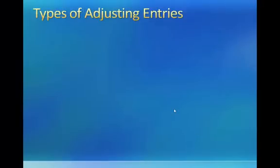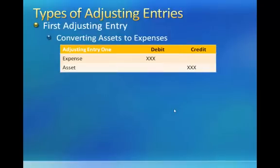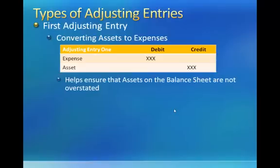There are four types of adjusting entries that firms must consider at the end of each accounting period. The first adjusting entry converts assets to expenses. This type of entry is needed when cash is paid prior to an expense being incurred and involves a debit to an expense account and a credit to an asset account. Recording this type of adjusting entry helps to ensure that asset account balances reported on the balance sheet are not overstated. It also helps ensure that expenses recorded on the income statement are not understated. If this adjusting entry is not made, net income would be overstated.